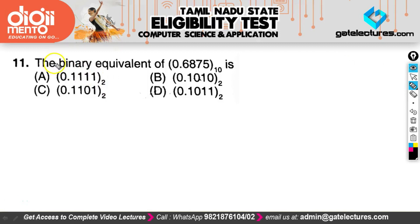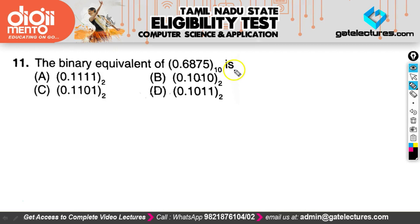The next question asks for the binary equivalent of a decimal fraction. The standard method involves multiplying by 2 repeatedly to get each digit, but that is quite lengthy. Instead, here is a trick that is very easy to follow during the examination.